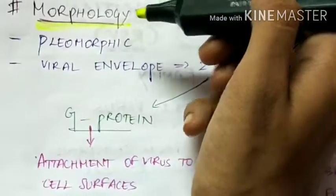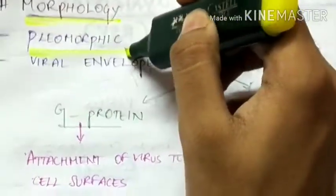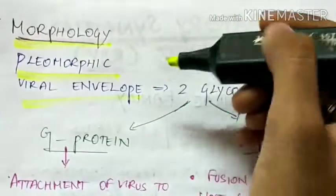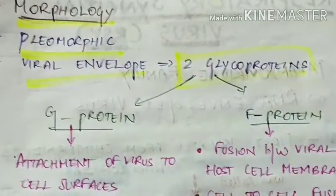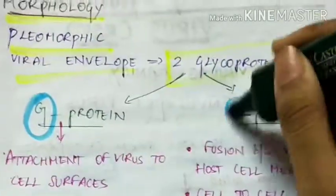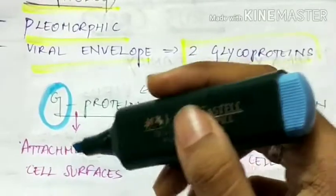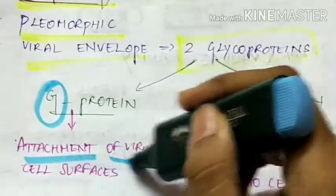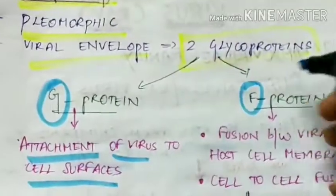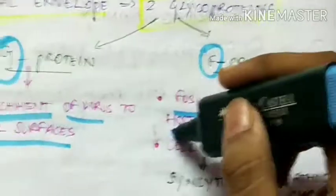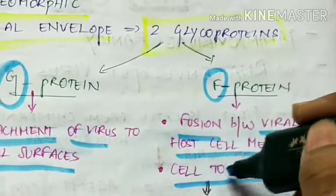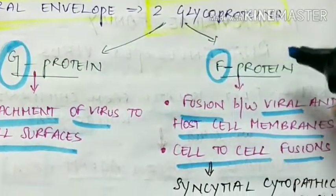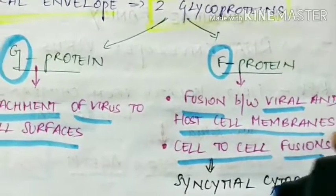Morphology of respiratory syncytial virus: it is a pleomorphic virus and the virus envelope is made up of two glycoproteins — glycoprotein G and glycoprotein F. The G protein is responsible for attachment of the virus to the host cell surface, and the F protein is responsible for fusion between the viral and host cell membranes and also for cell-to-cell fusion. This cell-to-cell fusion caused by the F protein is responsible for the syncytial cytopathic change.